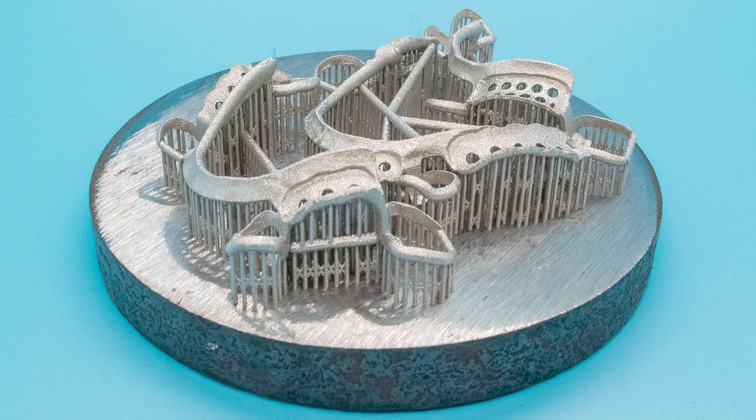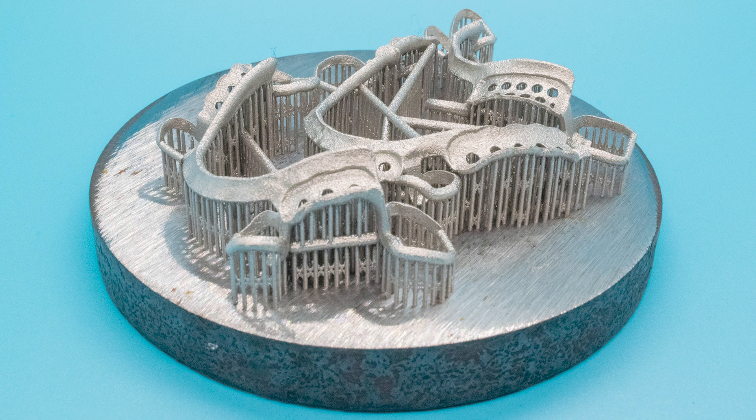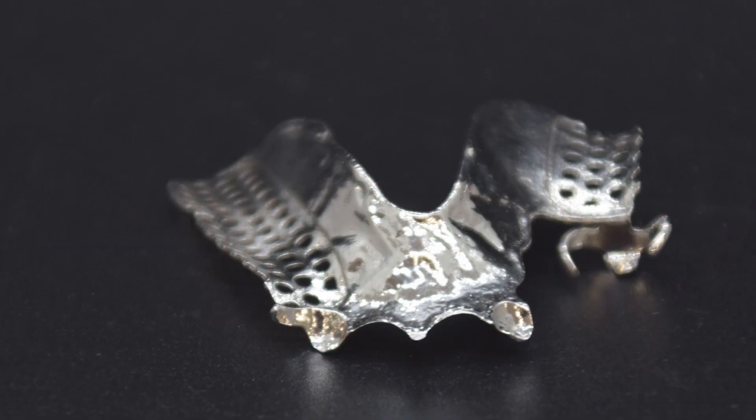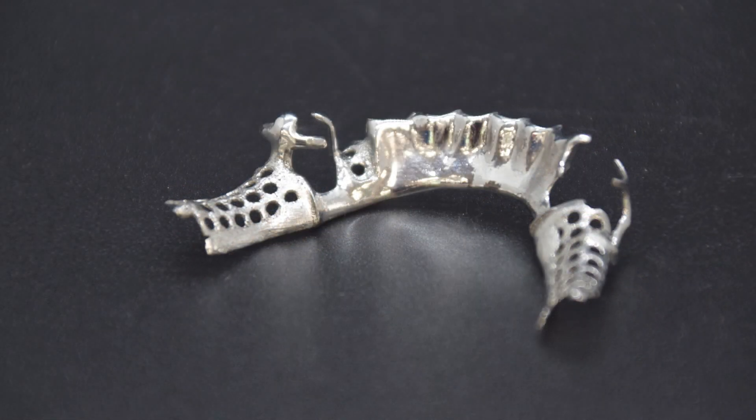Once printed, the frames are annealed and finished. The final prosthesis is completed via press pack with Lucitone 199 acrylic and Arctic teeth - a truly unique fusion of traditional and digital techniques. Our DMLS metal partials are the new standard for removable partial dentures.